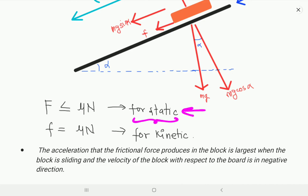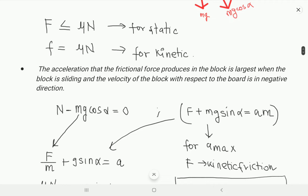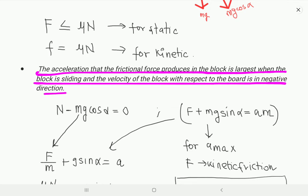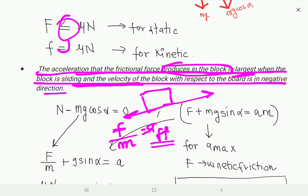For static friction the value is less than or equal to mu*N (inequality), and for kinetic friction it equals mu*N. The acceleration that friction produces in the block is largest when the block is sliding, because the inequality changes to equality and we get the maximum value of mu*N. So the acceleration is maximized when the block is sliding.